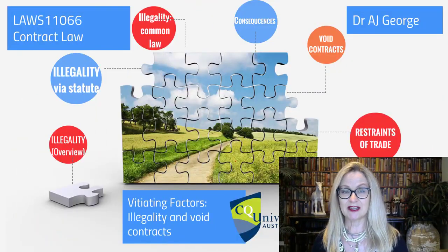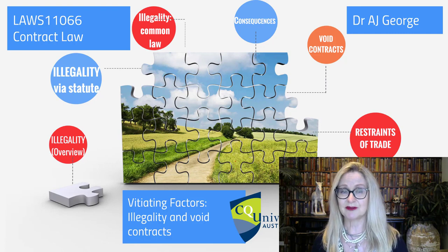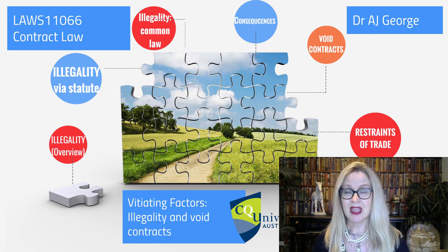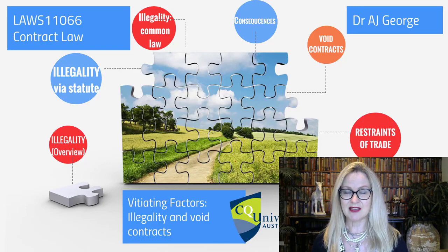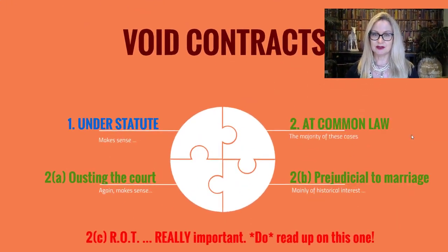Hi folks and welcome back to Contract Law. This is video 3 in the video series on illegality and void contracts. In the first video we had a look at illegality via statute, and in the second video we had a look at illegality via common law and also the consequences that flow from illegality. In this video we're going to have a look at void contracts and restraints of trade.